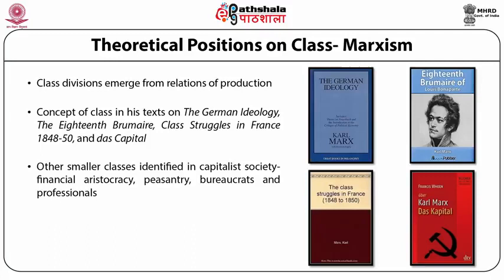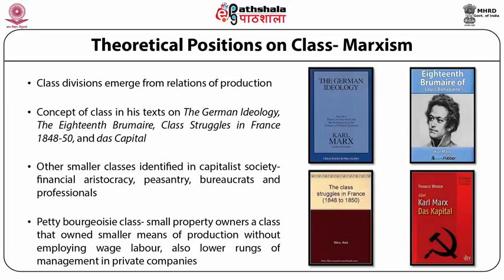Other smaller classes identified by Marx in capitalist societies are financial aristocracy, peasantry, bureaucrats and professionals. One class that plays a very significant role in capitalist society is the petty bourgeois class. Petty bourgeois refers to small property owners — a class that owns smaller means of production without employing wage labour, and also refers to the lower rungs of management in private companies. This class plays a significant role in maintaining the capitalist system, primarily because they are large in number.